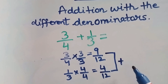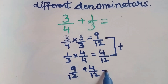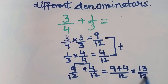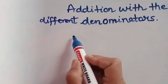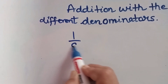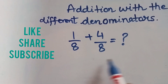Now we can add these two. We add 9 by 12 plus 4 by 12. Since the denominator is same, we will add 9 and 4. Now I will give you one sum which you can do and write in the comments: what is the answer of 1 by 8 plus 4 by 8? You have to find the answer and write it in the comments.